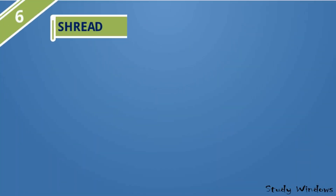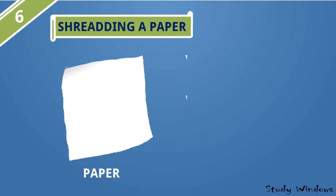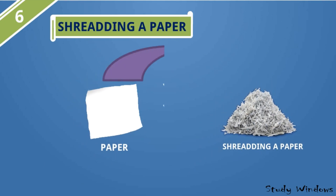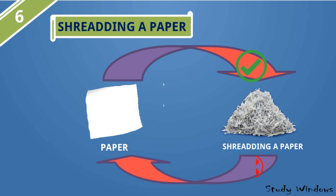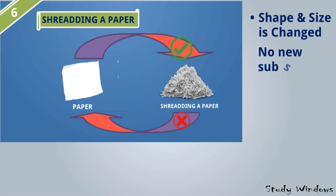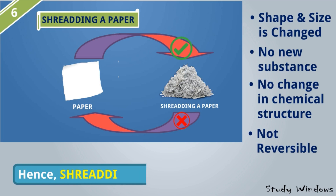Shredding a paper: Look at this example — a shredding machine takes paper and produces shredded paper. We can go from paper to shredded paper, but we cannot get the original paper back from shredded paper. Shape and size is changed. No new substance is produced because shredded paper is also paper. There is no change in chemical structure. It is not reversible. Hence, shredding a paper is a physical change.